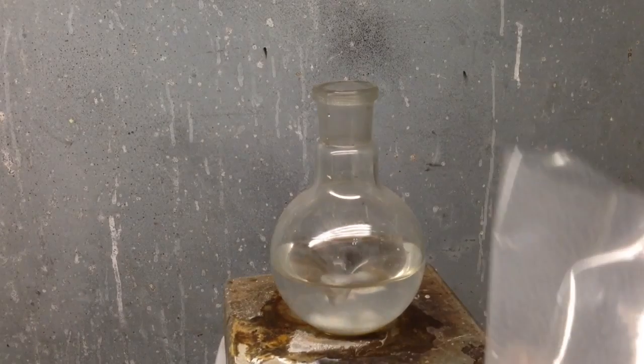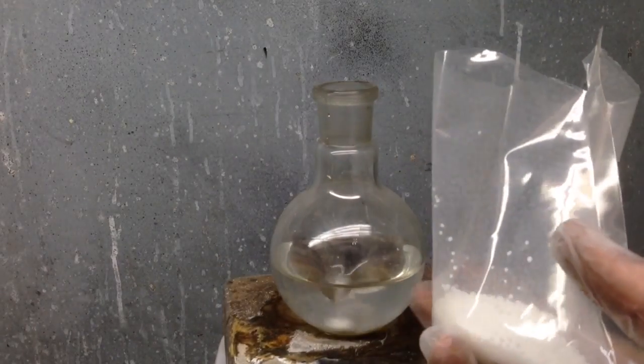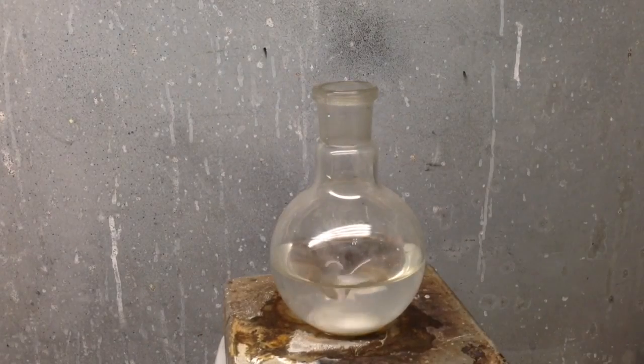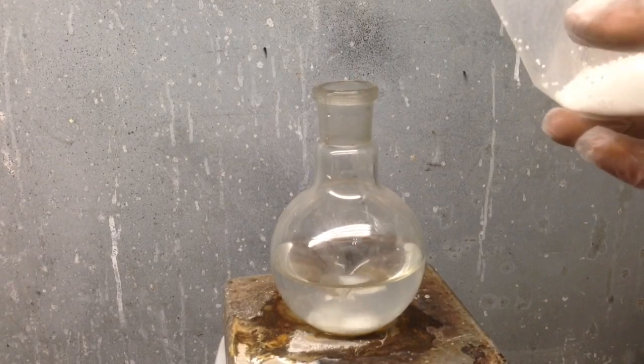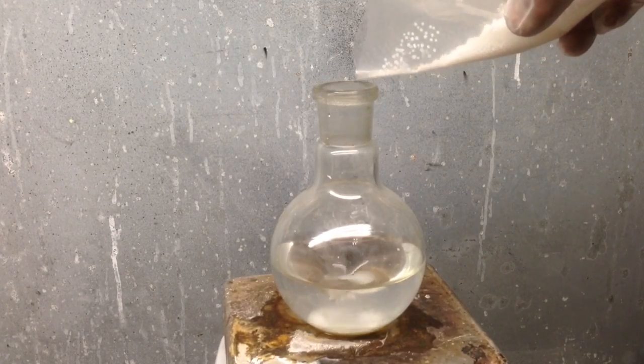So you want to start by adding your sodium hydroxide to your water. So I've got 40 grams of sodium hydroxide, 100 milliliters water. It's on a stir. This is actually cold water too. So it helps to keep the boiling down a little bit. So we'll go ahead and add that.